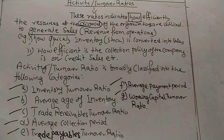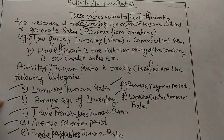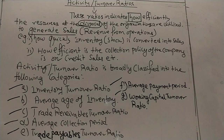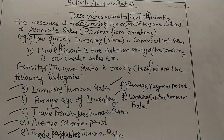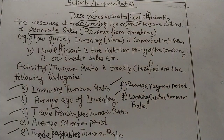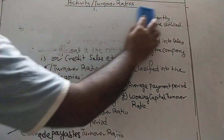Broadly, activity or turnover ratios are classified into the following categories: inventory turnover ratio, average age of inventory, trade receivables turnover ratio, average collection period, trade payables turnover ratio, average payment period, and working capital turnover ratio. These are the seven categories or formulas we will calculate. As promised, let us start with inventory turnover ratio.